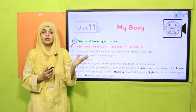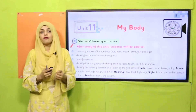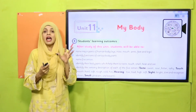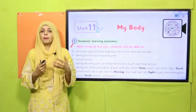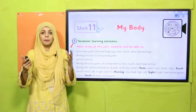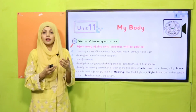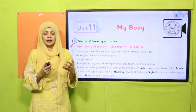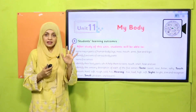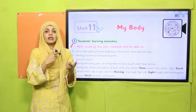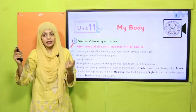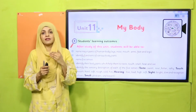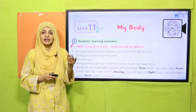Let's look at the SLOs given on page number 81. These are for the parents and teachers to understand that in Unit Number 11, we have covered these points: by now all students are able to name their major body parts and tell which body part performs which function. They are also able to name their five senses and describe which sense belongs to which organ. We have also identified the sensory description of all five senses.